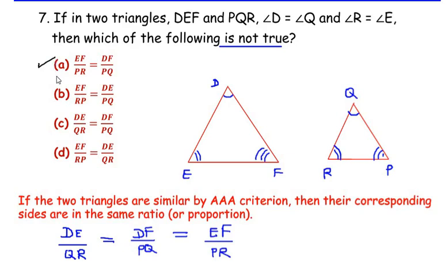EF/RP = DE/PQ. But it should be DE/QR, not PQ. So option B is the wrong answer; this is the one which is not true. Once you get the answer, you can check for the other two options if they are correct or not. Now let us look at option C: DE/QR